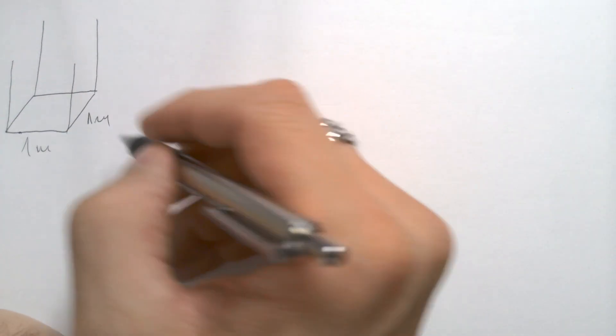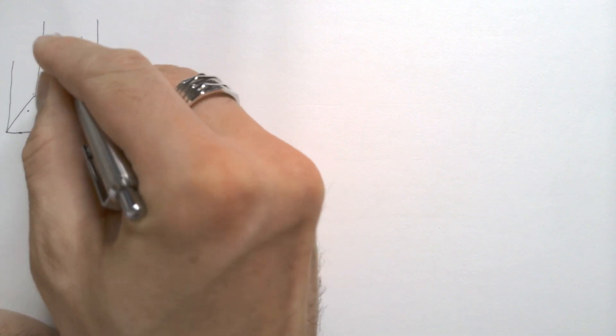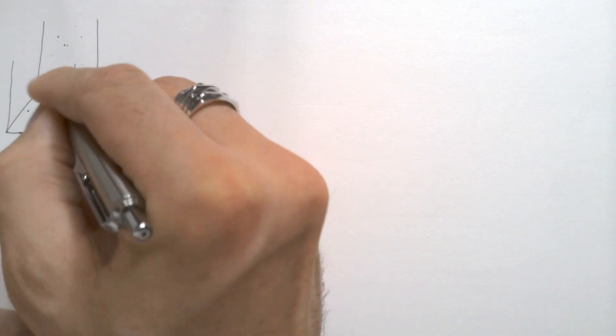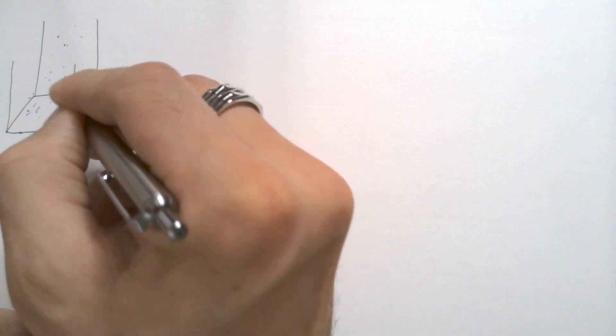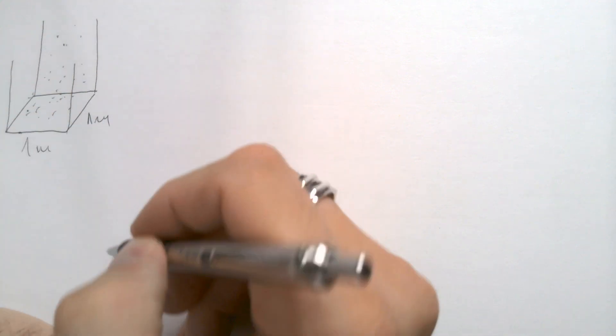In this column of air, we have air molecules. And of course, there are more of them close to the surface than at higher elevations because gravity is acting down.